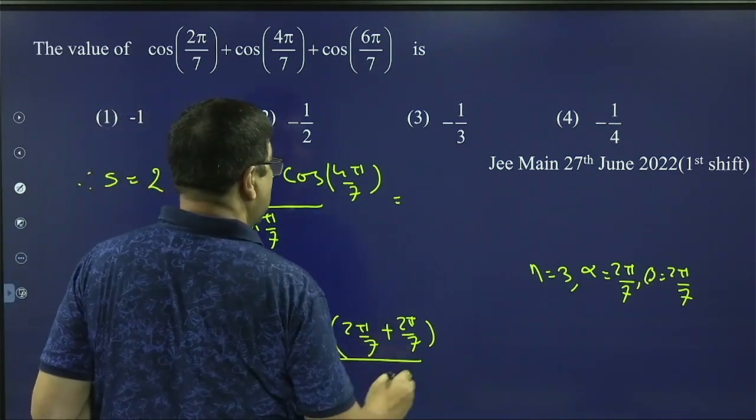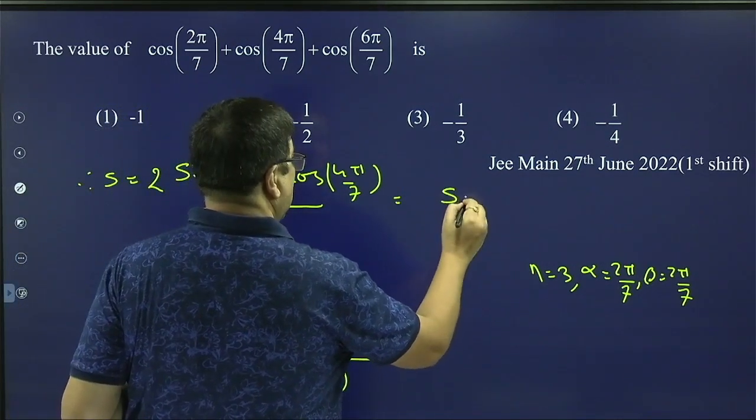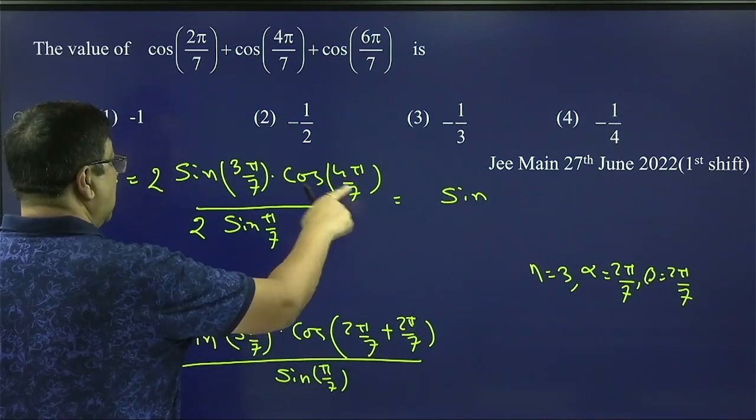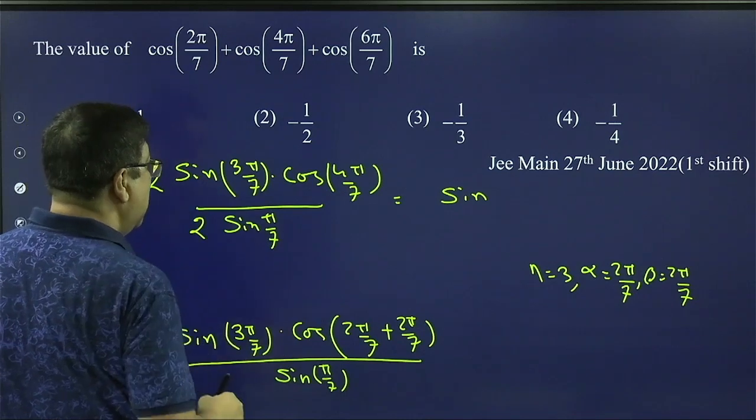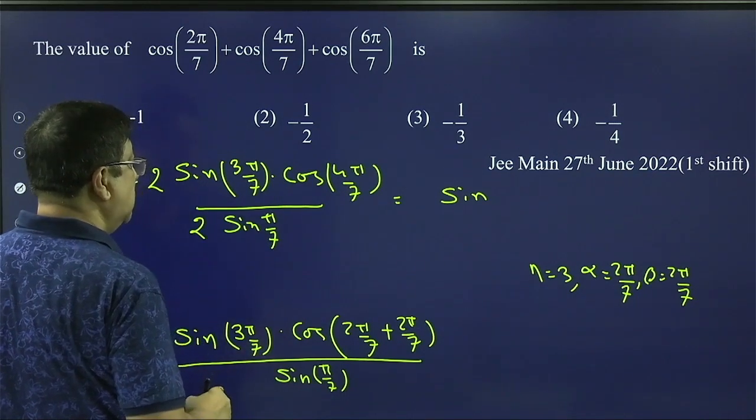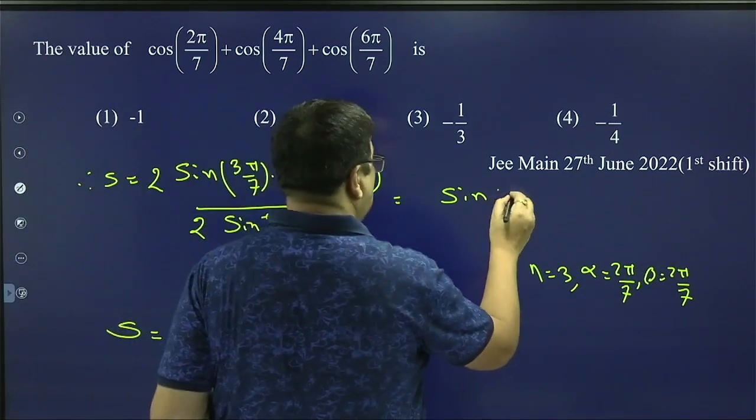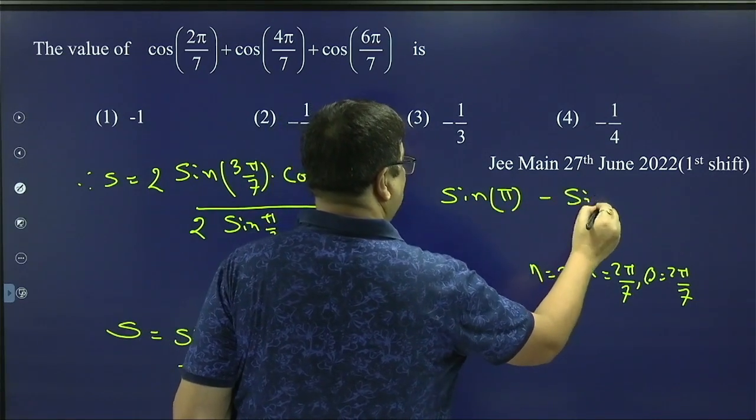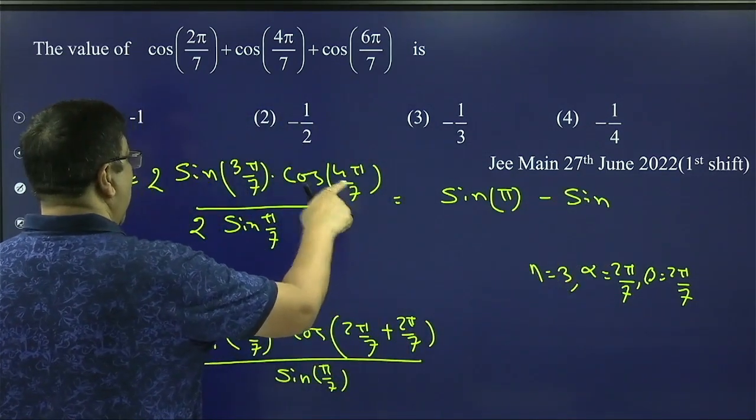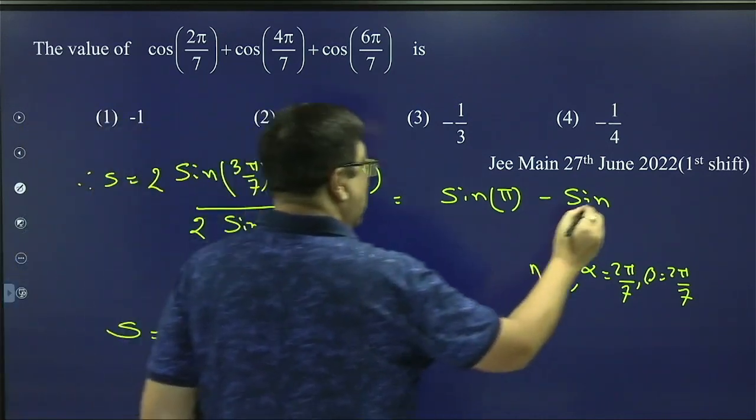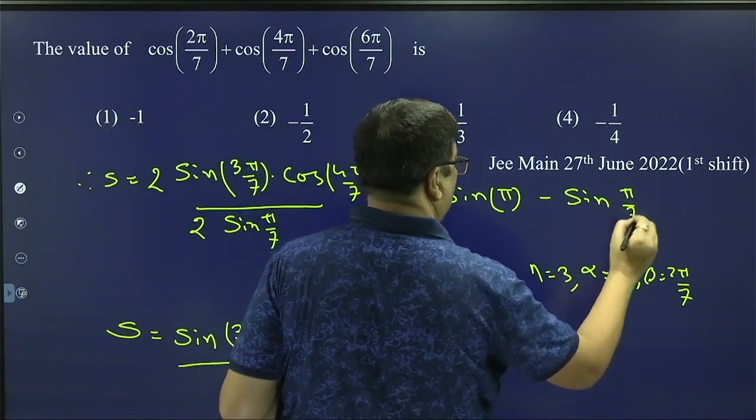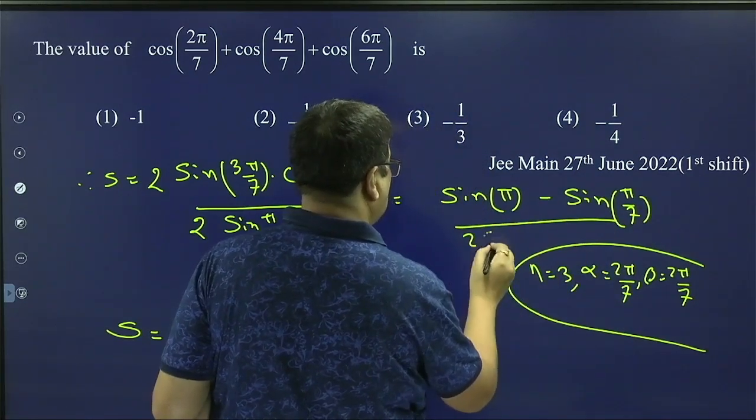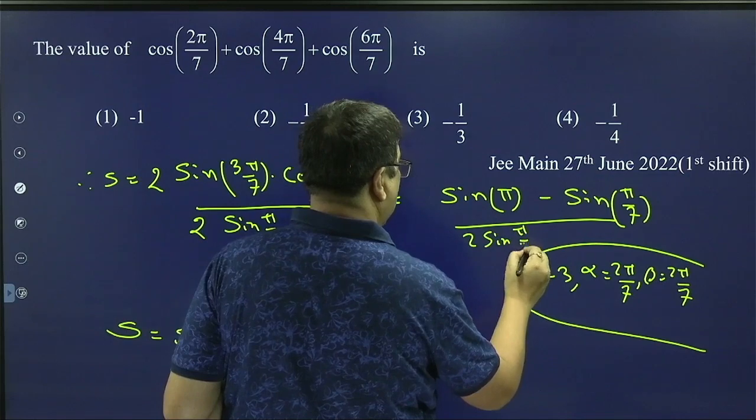So this is sin. If you add, that is c. This is (c+d)/2. This is (c-d)/2. So we are adding here. In this case, we are getting 3 + 4 = 7. 7π/7. That is sin π. And minus sin, if we subtract, we are getting d. 4π/7 - 3π/7. That is sin(π/7). Total divided by 2sin(π/7).